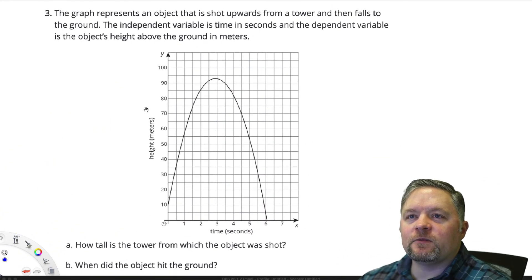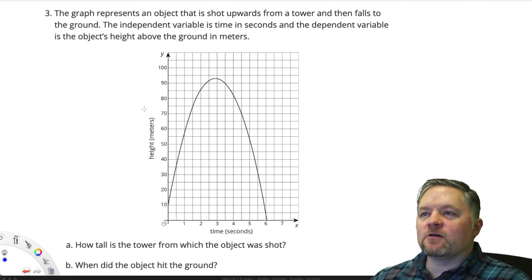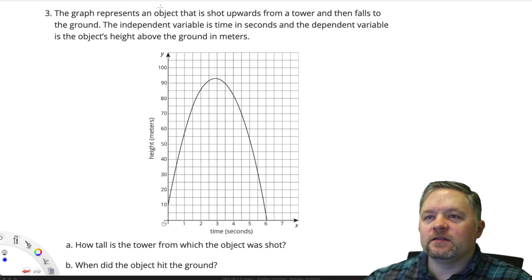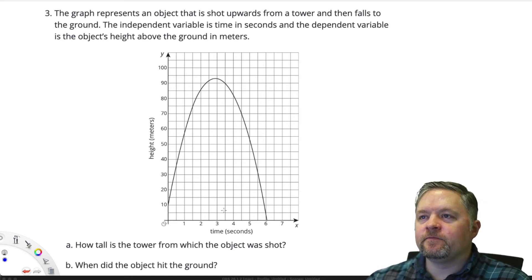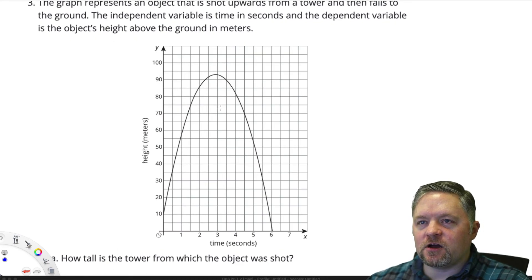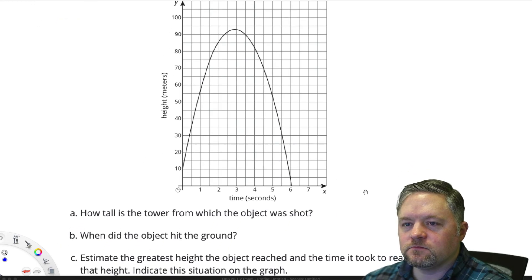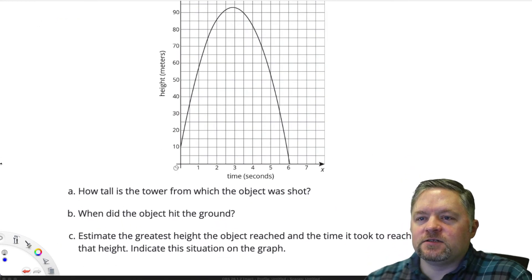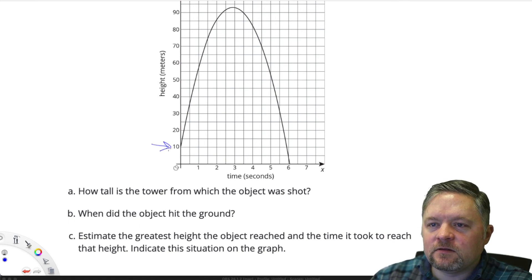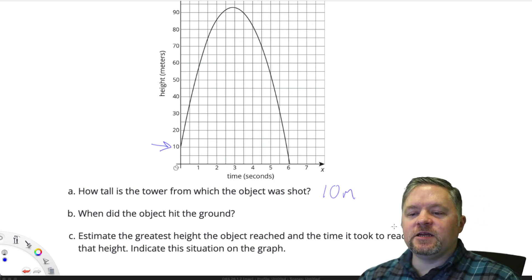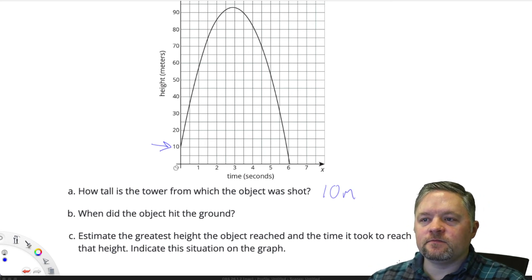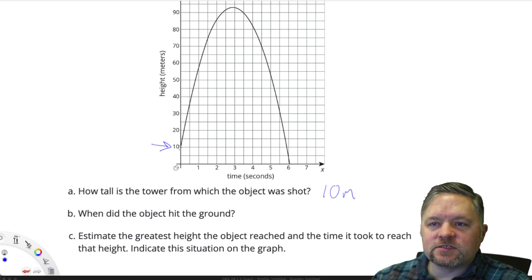A graph represents an object that's shot upwards from a tower and then falls to the ground. The independent variable is time in seconds. Dependent variable is the object's height above the ground. How tall is the tower from which the object was shot? The tower is 10 meters tall because we started 10 meters off the ground.